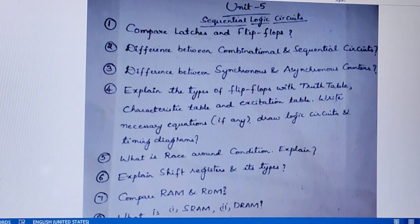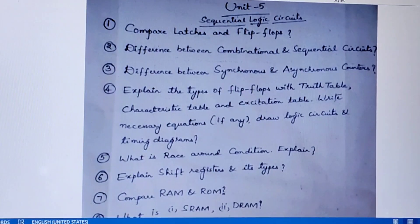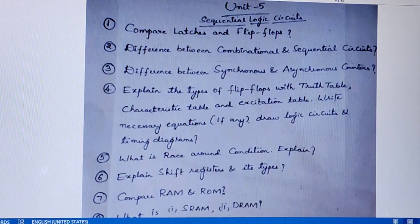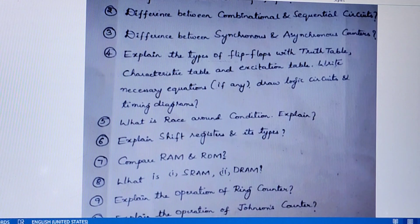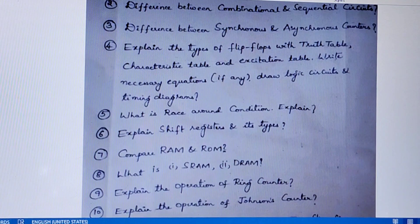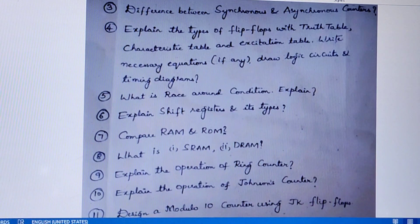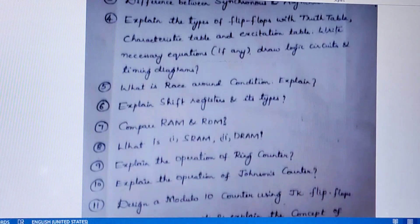Coming to unit 5, sequential logic circuits. First, compare latches and flip-flops — study the definitions of latch and flip-flop, the difference between combinational and sequential circuits, and the difference between synchronous and asynchronous counters. Next, explain the types of flip-flops with truth table, characteristic table, and excitation table. Write necessary equations if any, draw logic circuits and timing diagrams.